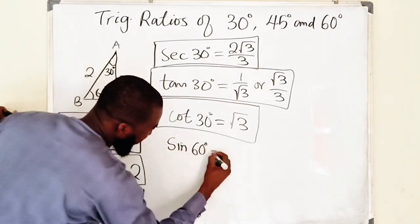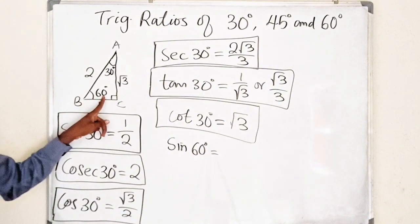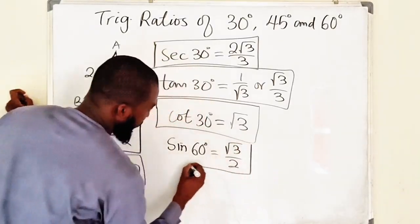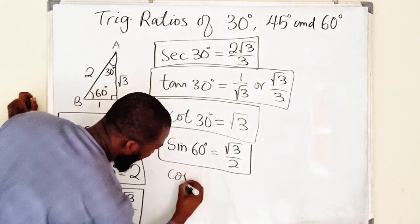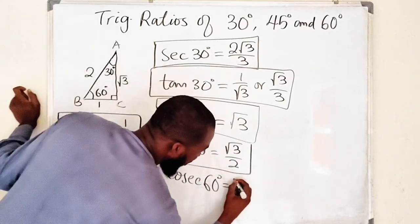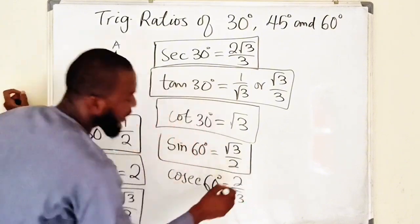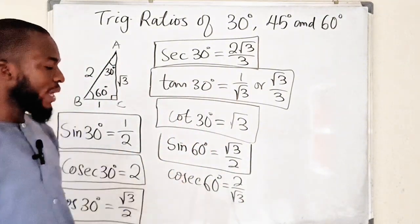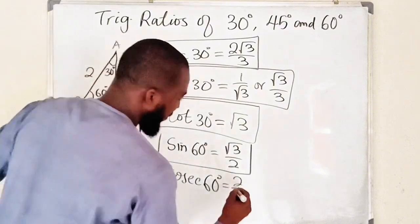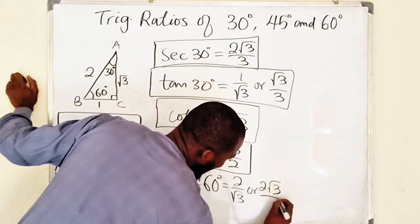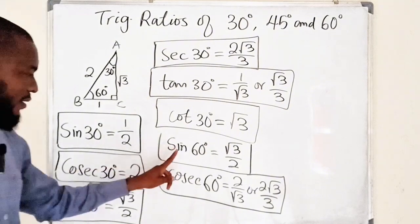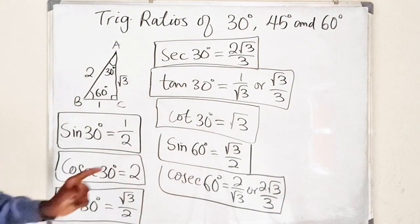For 60 degrees: sine of 60 degrees equals opposite divided by hypotenuse. The side opposite 60 degrees is root three, and the hypotenuse is two, so sine of 60 degrees equals root three over two. Its reciprocal — cosecant of 60 degrees — is two over root three. Rationalizing by multiplying top and bottom by root three gives two root three divided by three. So cosecant of 60 degrees equals two root three over three.